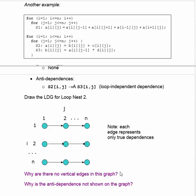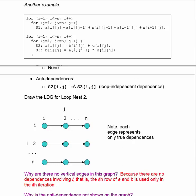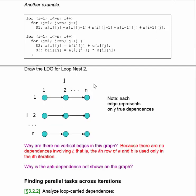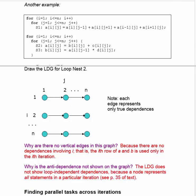Why are there no vertical edges in this graph? That's because there are no dependences involving i, so we could do the rows in parallel. Why is the anti-dependence not shown on the graph — the graph shows only the true dependence here. The reason is that the anti-dependence is not loop-carried, and because it's not loop-carried, it does not appear in the LDG, since nodes represent all statements in the loop body.